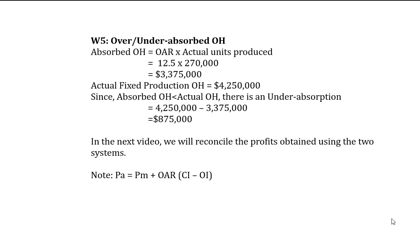The two profits are related by the following equation: absorption costing profit = marginal costing profit + (overhead absorption rate × movement in inventory, i.e., closing inventory units minus opening inventory units). In a later chapter we will learn how to fully reconcile the two profits. Thank you, and until next time.